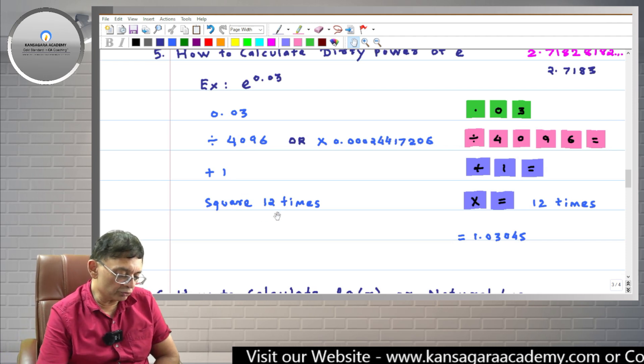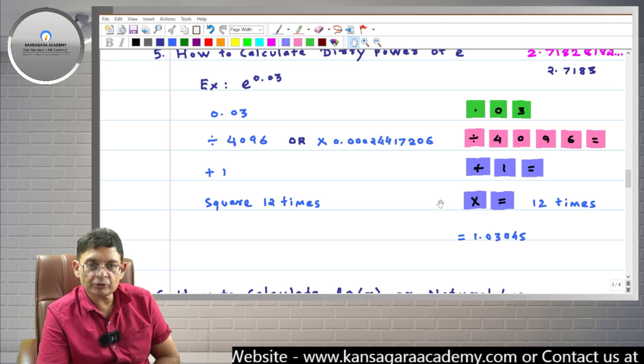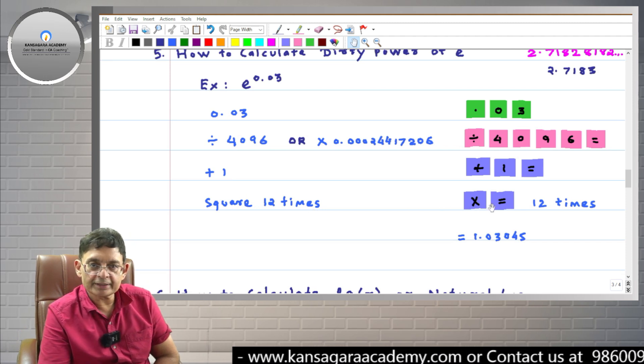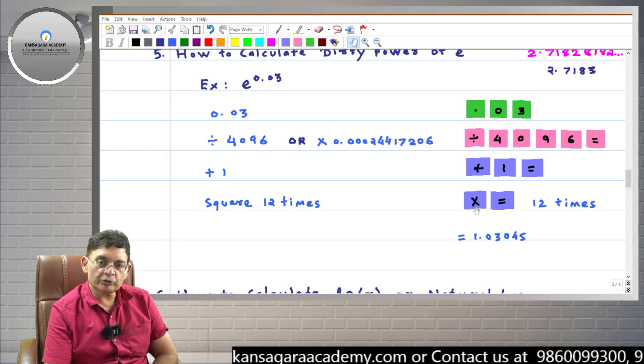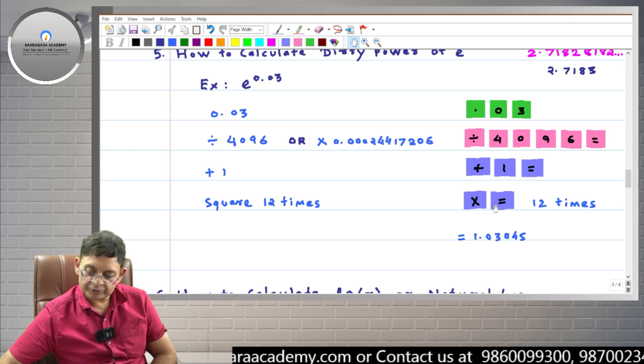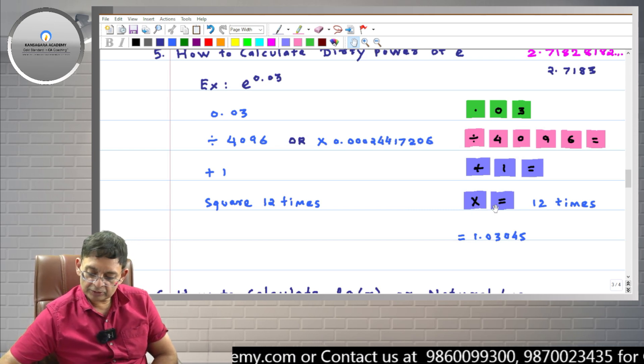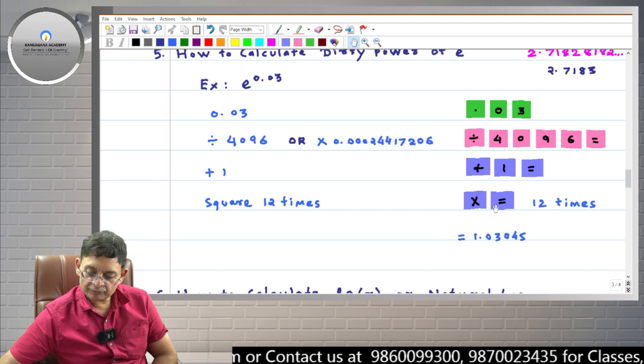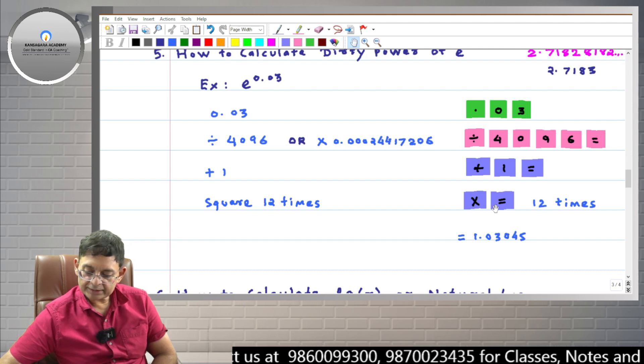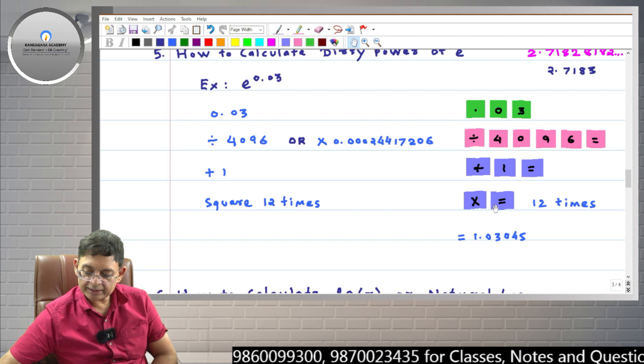Then friends, we have to take square 12 times. Now in a simple calculator, you know, times equals means square. So you have to do times equals 12 times. You do with me: 1, 2, 3, 4, 5, 6, 7, 8, 9, 10, 11, 12.